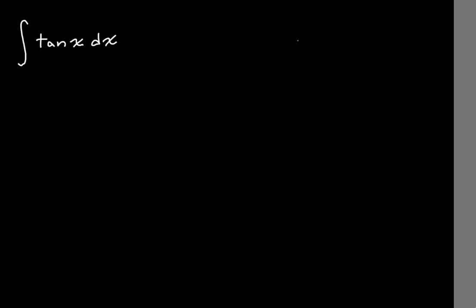To do this, we're going to get into a little bit of u-substitution. This derivation is reasonably easy as long as you don't let yourself get sidetracked by ideas such as integration by parts, which will just make things complicated. The first step in this process is redefining this as the integral of sine of x over cosine of x dx.